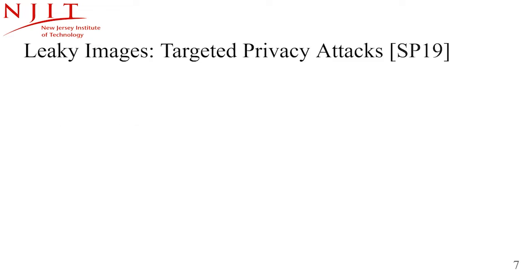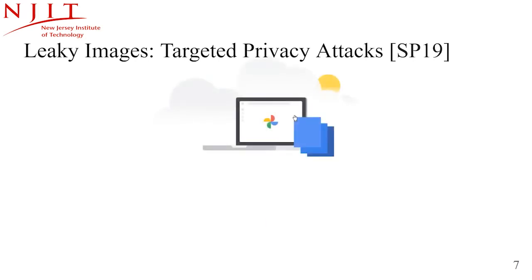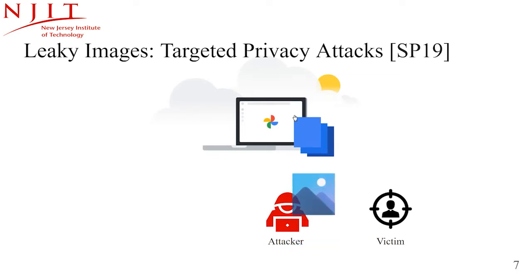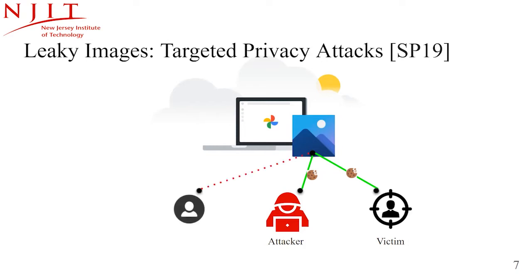Leaky resources lead to targeted de-anonymization on the web and were first introduced in the context of image sharing services. Assume both attacker and victim have an account on Google Photos. The attacker privately shares an image with the targeted victim — accessible only to the two of them, with authorization checked through cookies. Any attempt by other users to access this image fails because they lack the appropriate cookies and permissions. We call the URL pointing to this leaky image a state-dependent URL, or STURL, because the response differs depending on the user's state on the sharing service.